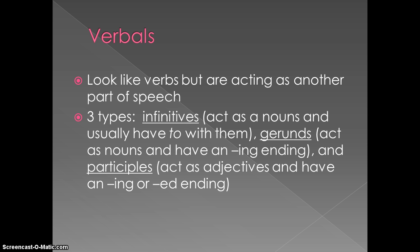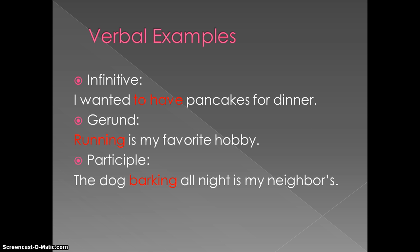The last one is the participle. They either have an -ING ending or an -ED ending. One looks like a past tense verb; one looks like an action verb. Here are some examples. The infinitive: 'I wanted to have pancakes for dinner.' The actual verb is 'wanted,' not 'to have.' Gerund: 'Running is my favorite hobby.' You can replace 'running' with 'it' — 'It is my favorite hobby.' It's a noun. You can never replace a verb with 'it' — that's the 'it test.' And then the participle: 'The dog barking all night is my neighbor's.' 'Is' is the verb. 'Barking' is not the verb — it's a verbal.